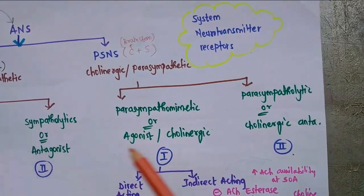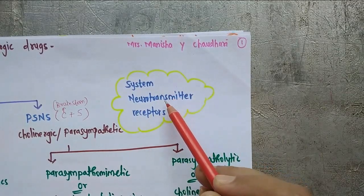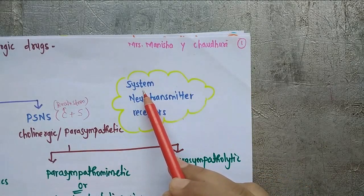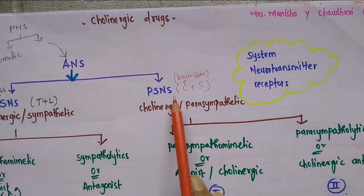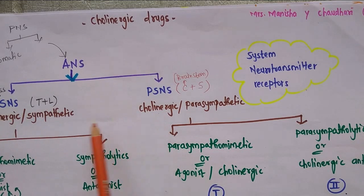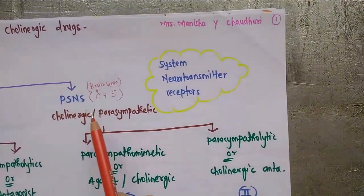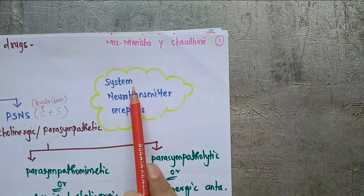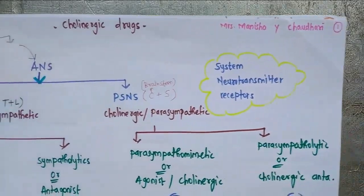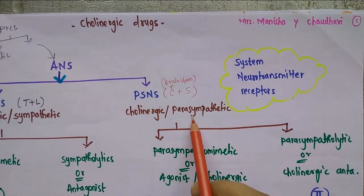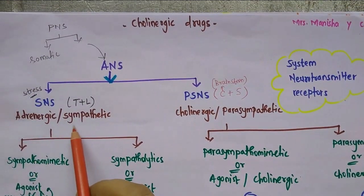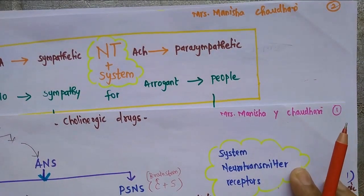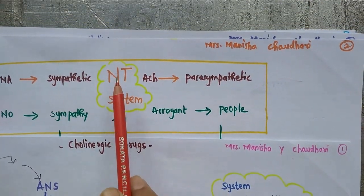Why is it so? Here in the diagram I have written system, neurotransmitter, and receptor. To understand the action of a drug, we need to understand the systems on which they are working. The systems are SNS and PSNS, adrenergic system and cholinergic system. Coming towards the neurotransmitter, the neurotransmitters are acetylcholine for the parasympathetic system and noradrenaline for the sympathetic system. To remember these neurotransmitters, I will give you a short trick.